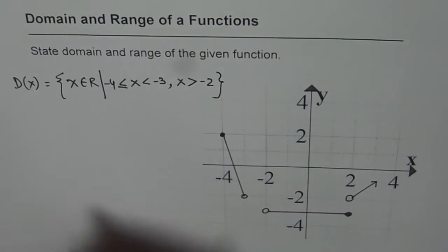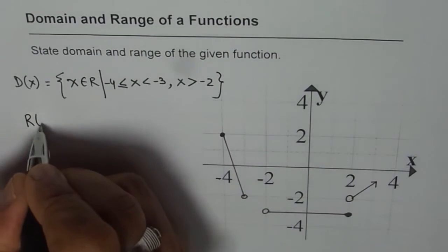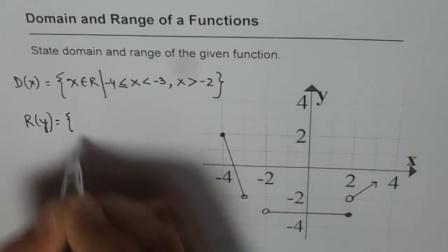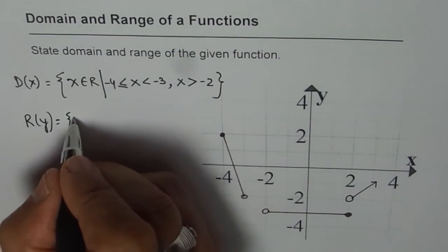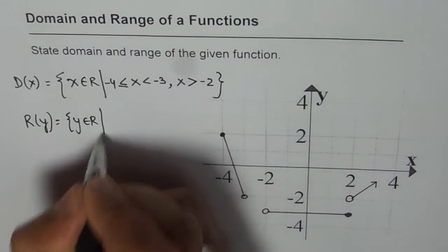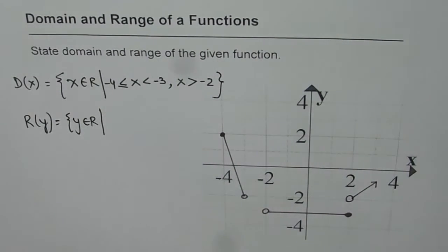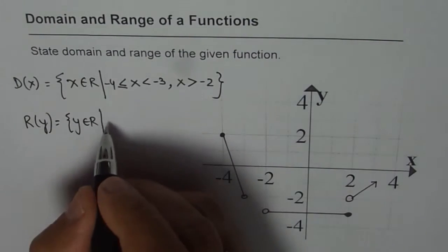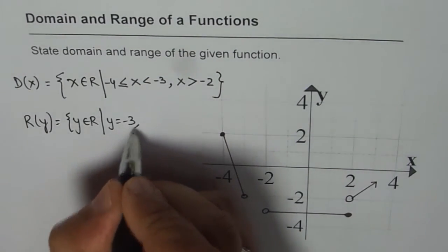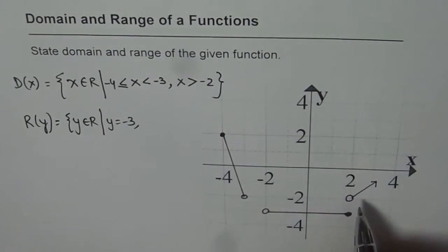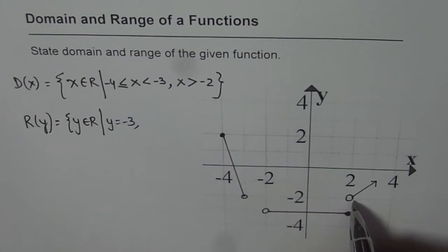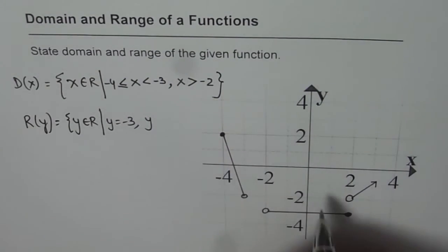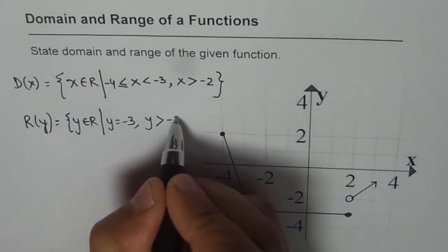Now let us consider the range. Range of the function is, since the lines are connected, y belongs to real numbers. The y value we see is equal to minus 3, so we have y equals minus 3 — that is one part. And then we find that y is greater than minus 2.